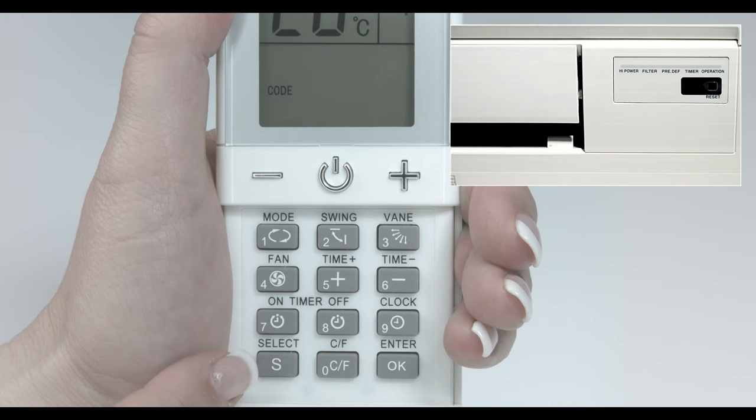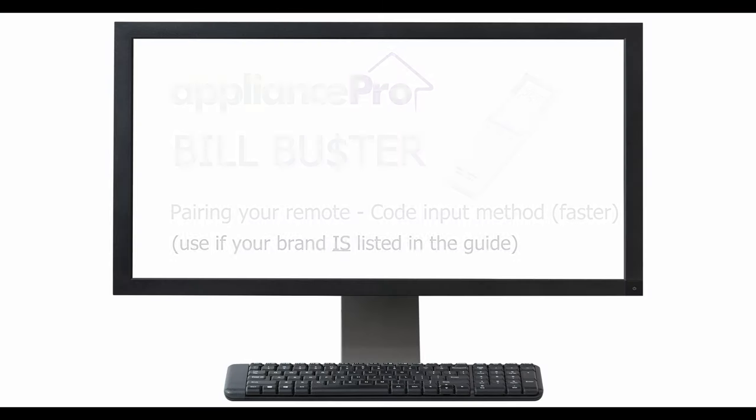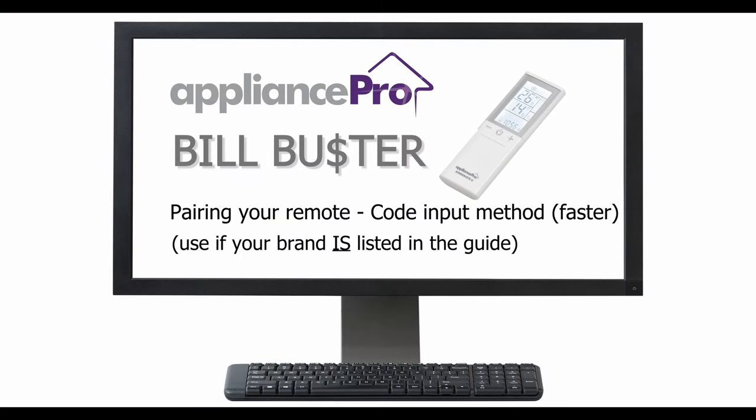Repeat these steps until you find the exact code that works everything. If the code advances before you could stop the sequence, you can go back and manually enter a code number. This is covered in a separate guide titled Code Input Method.